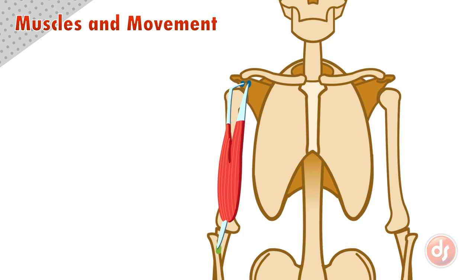An origin is a term that refers to where the muscle anchors. The insertion is the place the muscle acts on. We can simplify this by saying this is where the muscle starts and this is where the muscle stops.